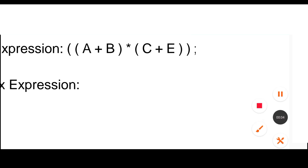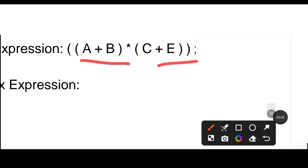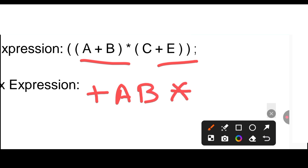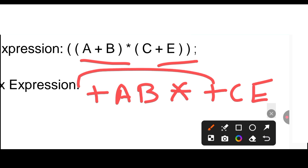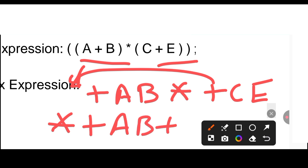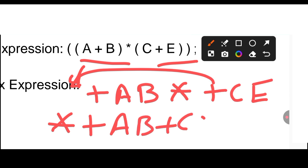Now we will see the prefix representation of this expression. Same process — first solve the brackets: put + A B, and then again the second bracket gives + C E. Now the multiplication shifts to the front, so the prefix representation is: * + A B + C E.